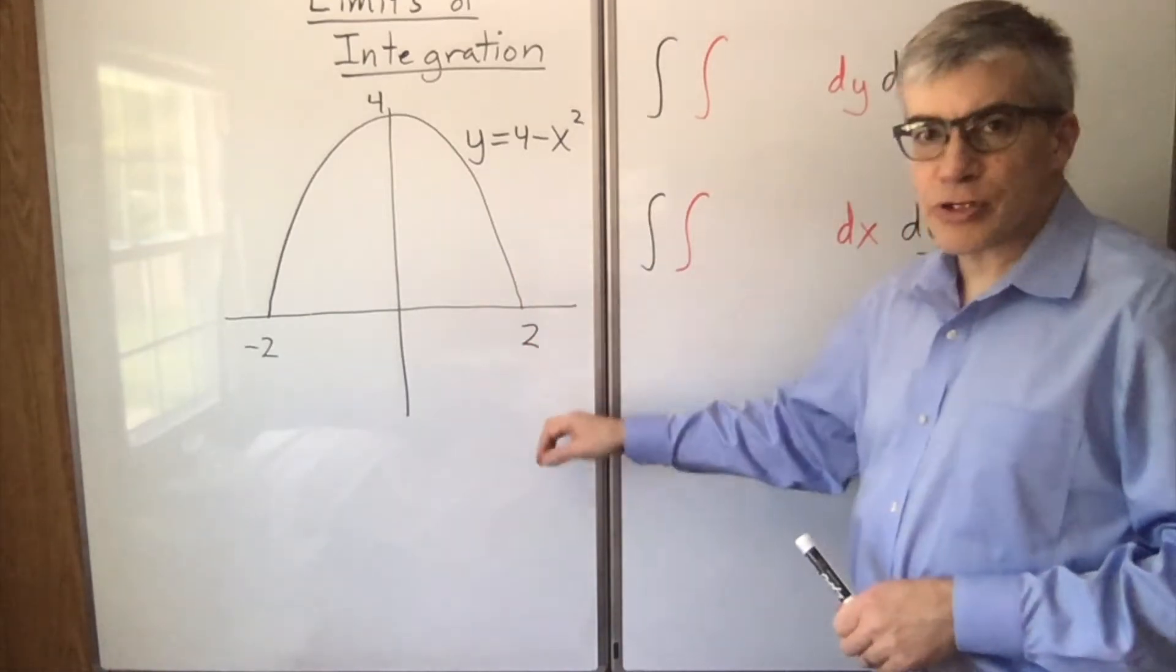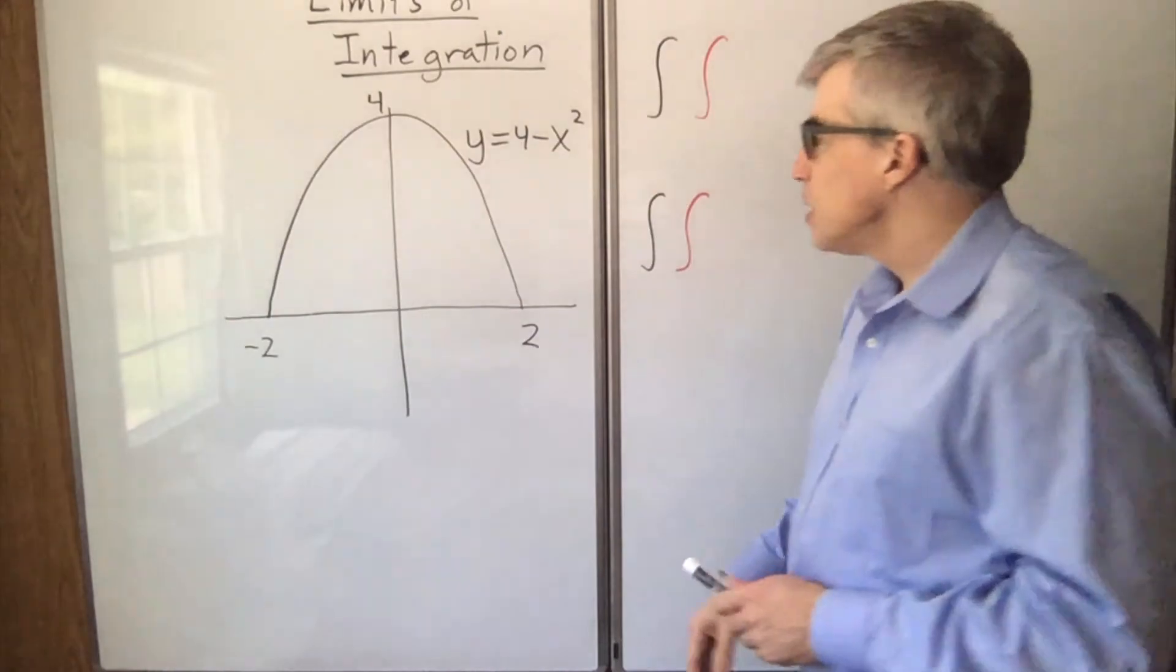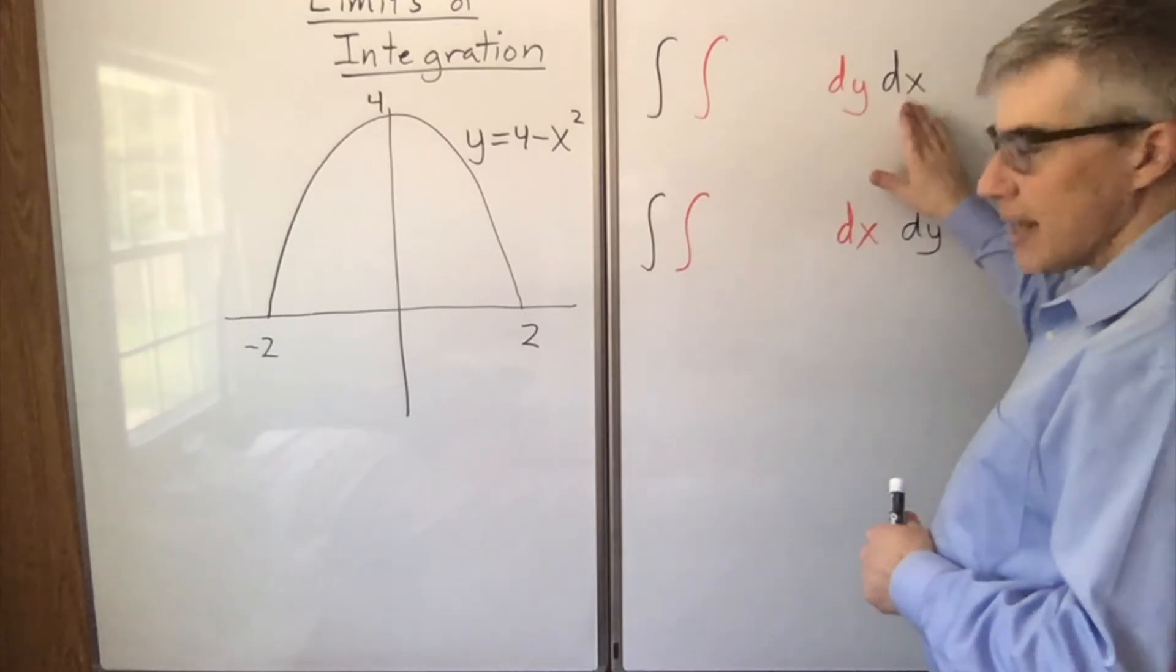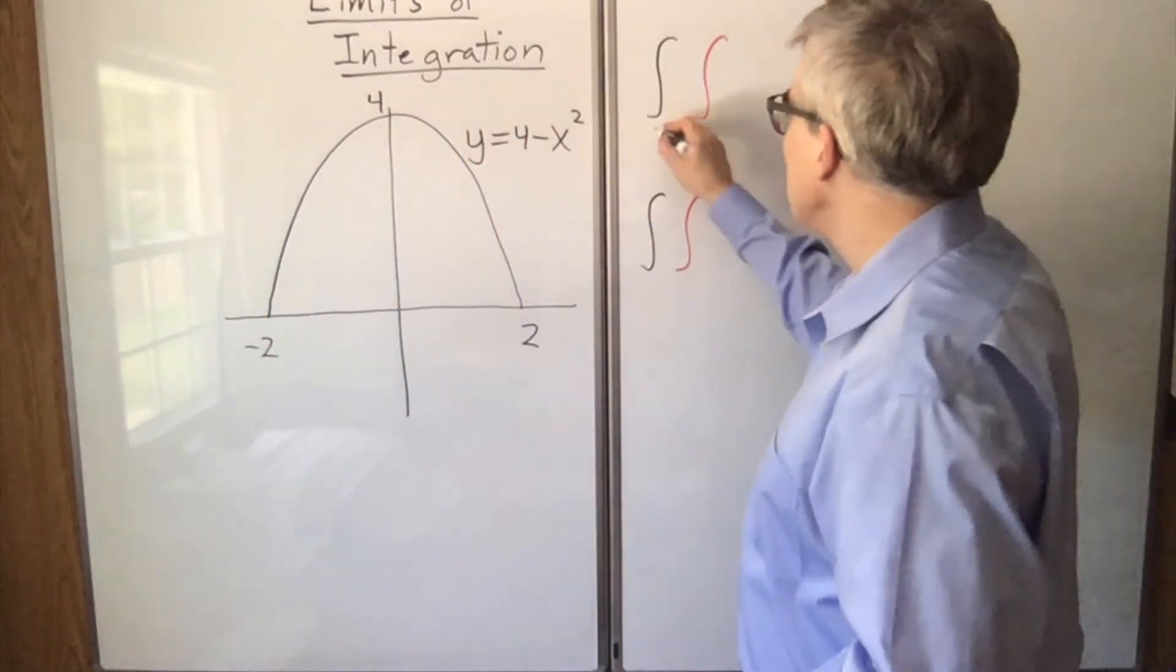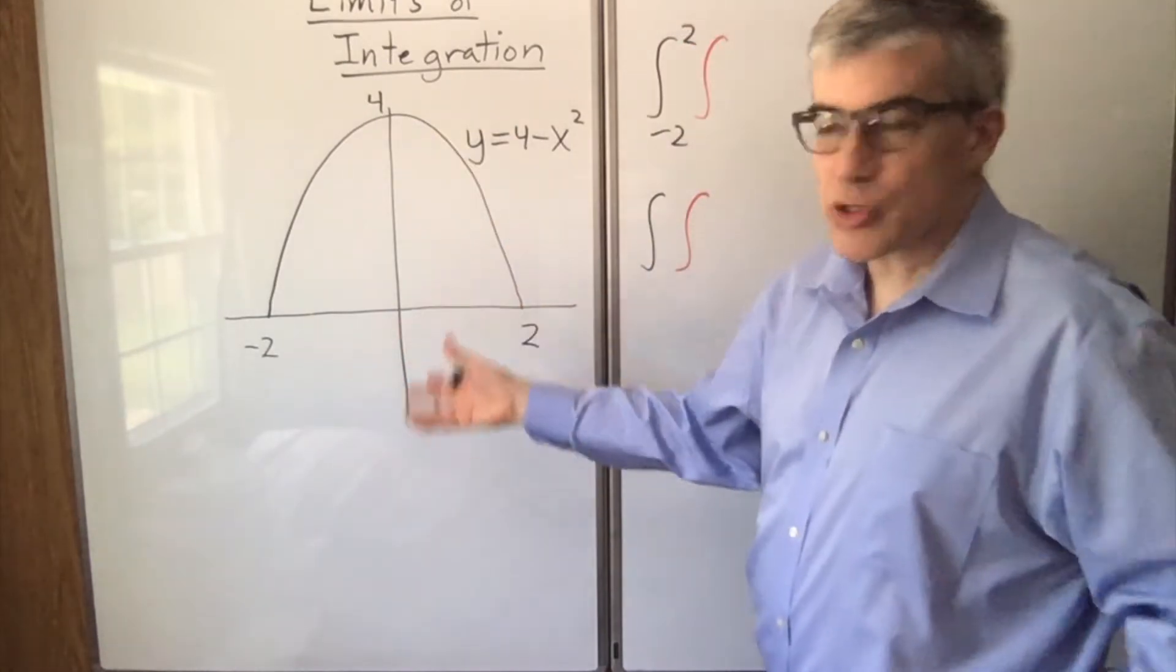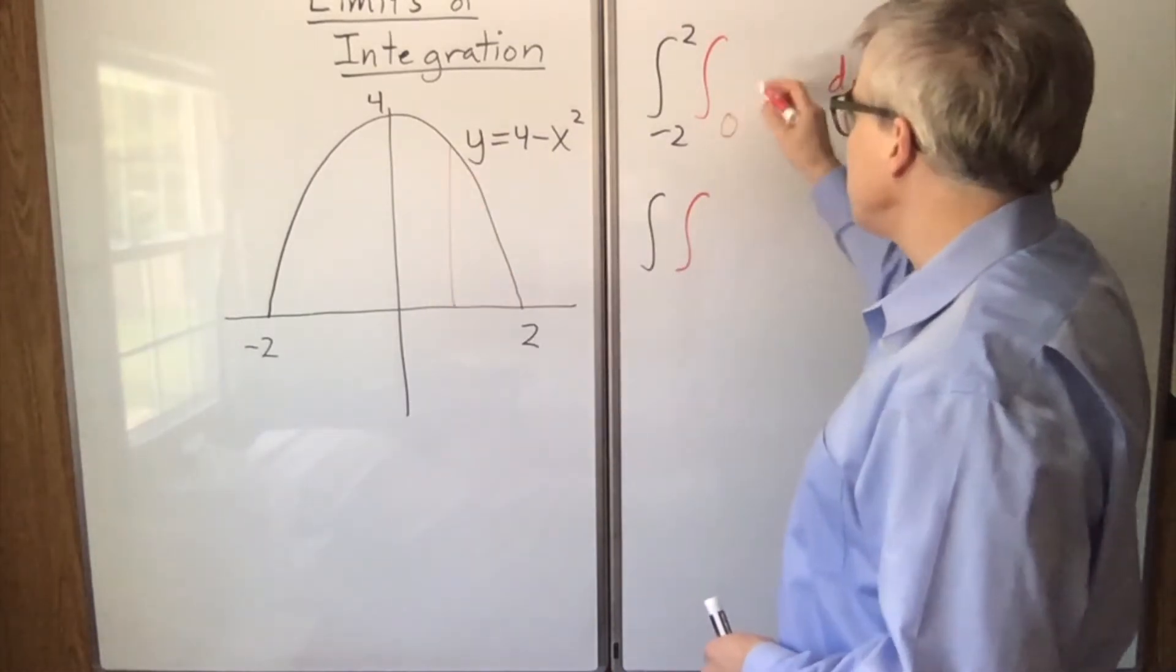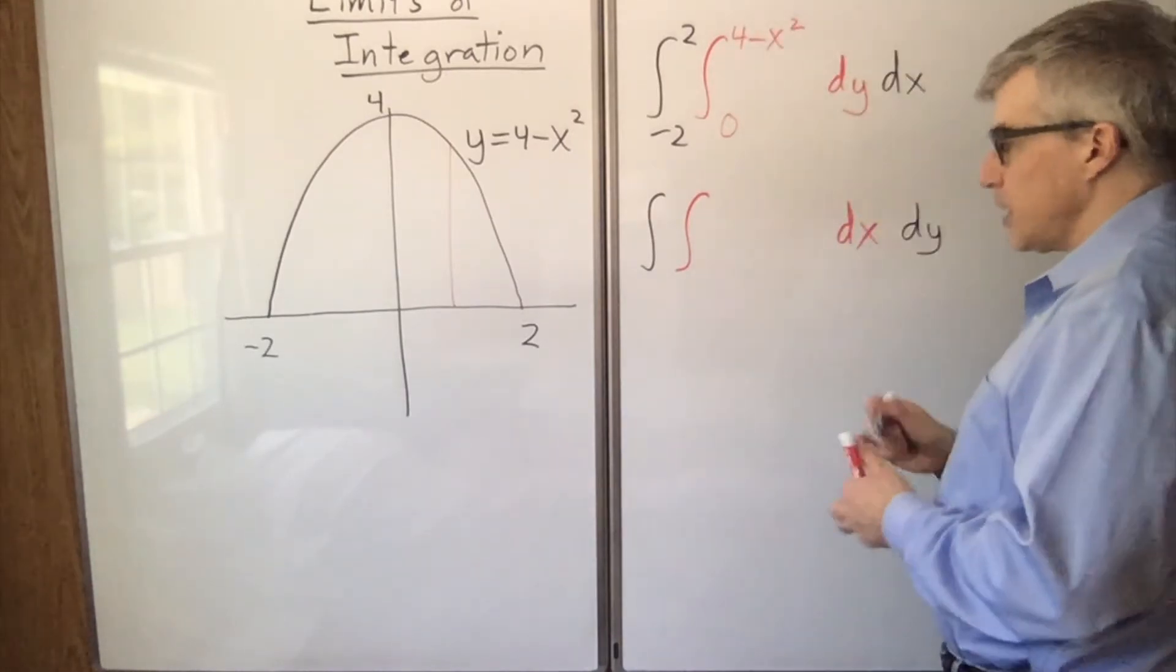Now for a curved function. y equals 4 minus x squared, an upside-down parabola, and bounded by the x-axis. If we integrate over x on the outside, x is just ranging from negative 2 to 2, because there's no change in what's the top function or the bottom function. And the inner limits are in fact 0 up to 4 minus x squared.